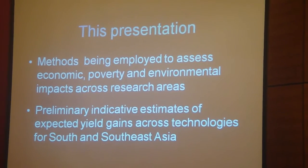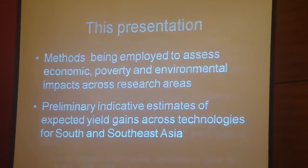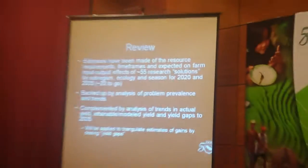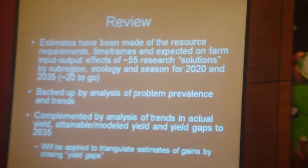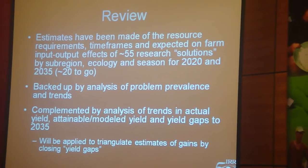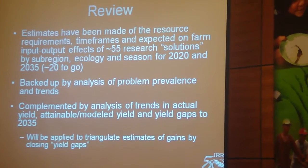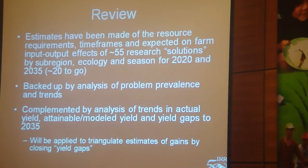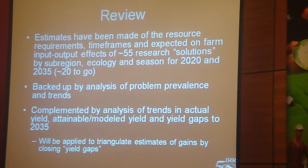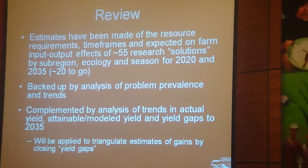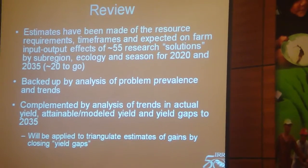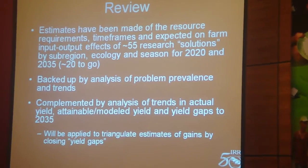To begin with, I'll start with the process and how we will use these data and how we will get to estimating impacts for the poor and on the environment. Where we are right now is we have about 55 research solutions that have been assessed by participatory scientist working groups, where they've looked at the resource requirements, probabilities of success in terms of having research solutions developed, the time frames for those being developed, and then the expected adoption levels and on-farm input-output effects.